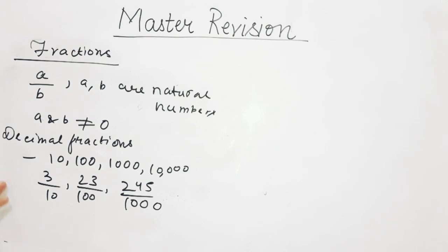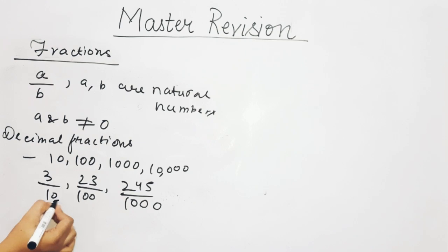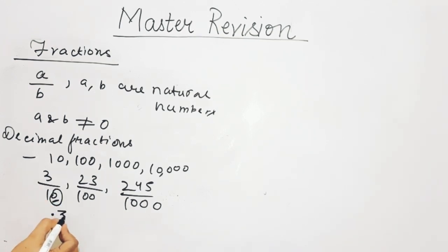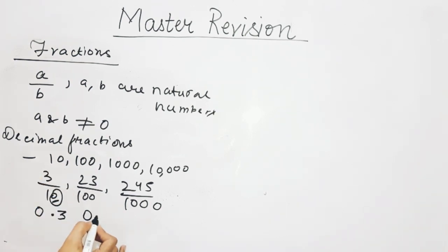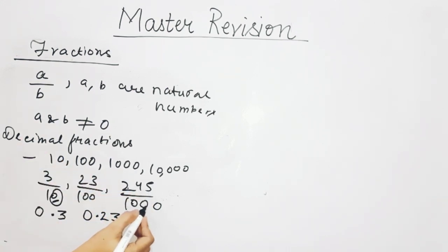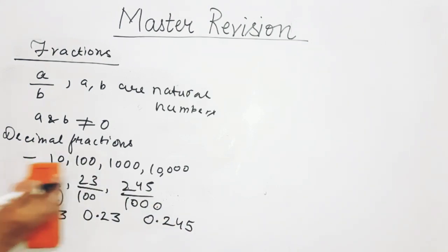How do we convert decimal fractions to decimals? Just count the number of zeros in the denominator. If there is 1 zero, one place is covered after the decimal point — so 3 upon 10 is 0.3. If there are 2 zeros, two places are covered after the point. If there are 3 zeros, three places are covered.